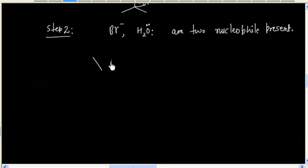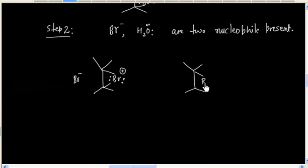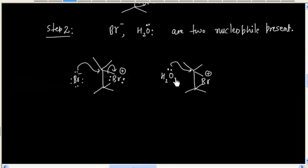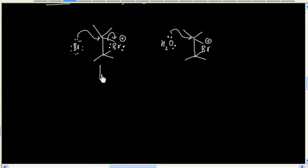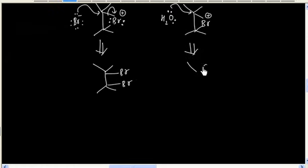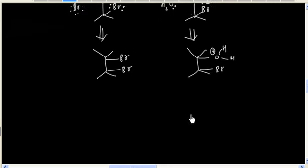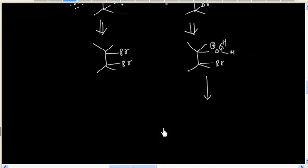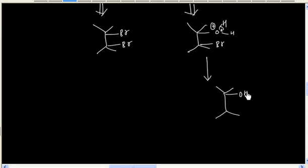So once again we will have two possible products. In one case, we will have the dibromoalkane. In the other case, the oxygen of water attacks, and after deprotonation by losing one H⁺, we will have the bromohydrin as the final product.